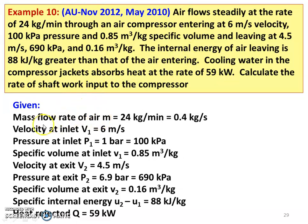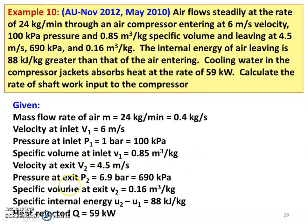Given data: mass flow rate M = 24 kg/min = 0.4 kg/s. Velocity at inlet V1 = 6 m/s. Pressure at inlet P1 = 1 bar = 100 kPa. Specific volume at inlet = 0.85 m³/kg. Velocity at exit V2 = 4.5 m/s. Pressure at exit P2 = 6.9 bar = 690 kPa. Specific volume at exit = 0.16 m³/kg. Internal energy change U2 − U1 = 88 kJ/kg. Heat rejected Q = 59 kW.